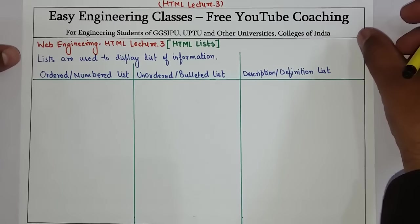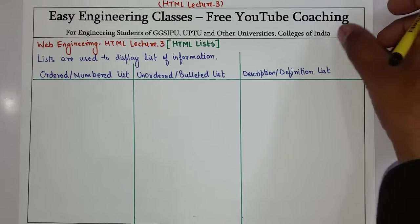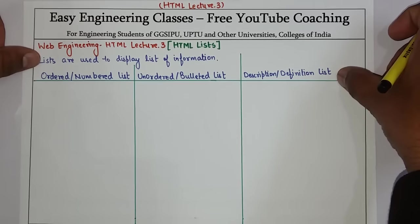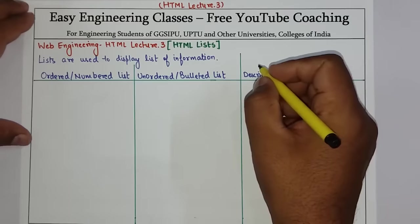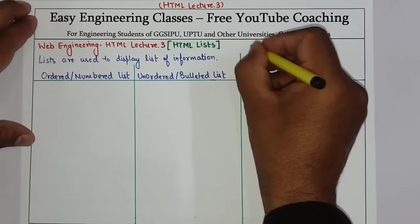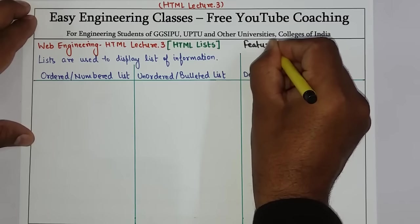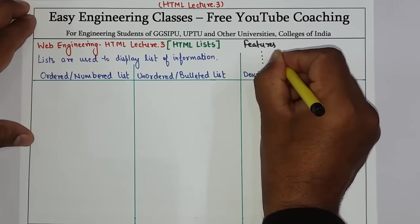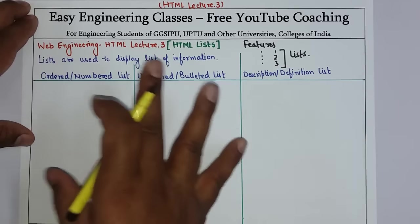Hello everyone. Welcome to the third lecture of HTML, which is a part of the web engineering course on this channel. Today we are going to see about lists. Lists are something which are used to display list of information. You will see this when we list some features, like dots or 1-2-3. We will see how to create lists in HTML.